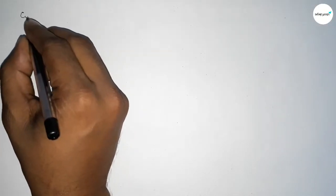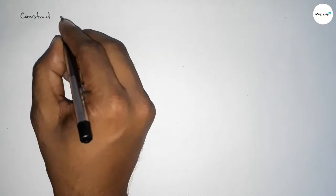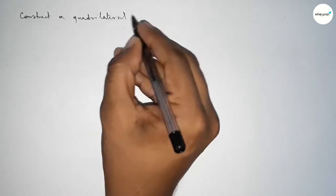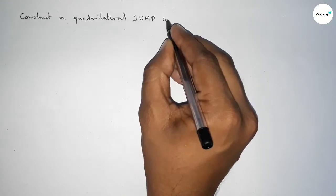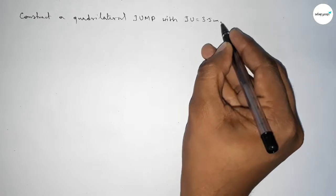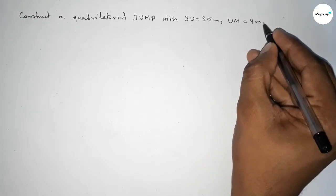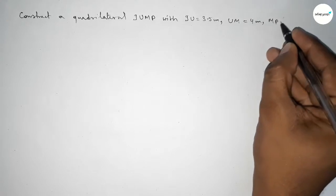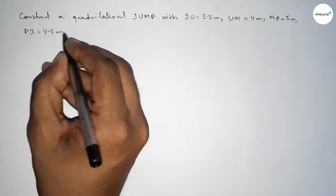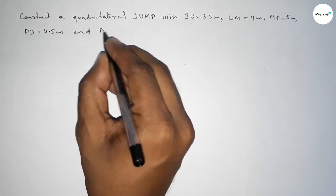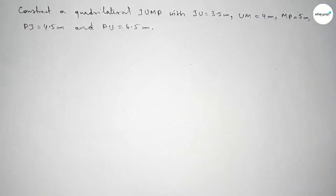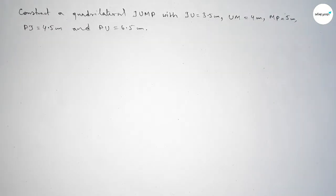Hi everyone, welcome to SI Share Classes. Today in this video we have to construct a quadrilateral JUMP with JU equal to 3.5 centimeter, UM equal to 4 centimeter, MP equal to 5 centimeter, PJ equal to 4.5 centimeter, and PU equal to 6.5 centimeter. So let's start the video.